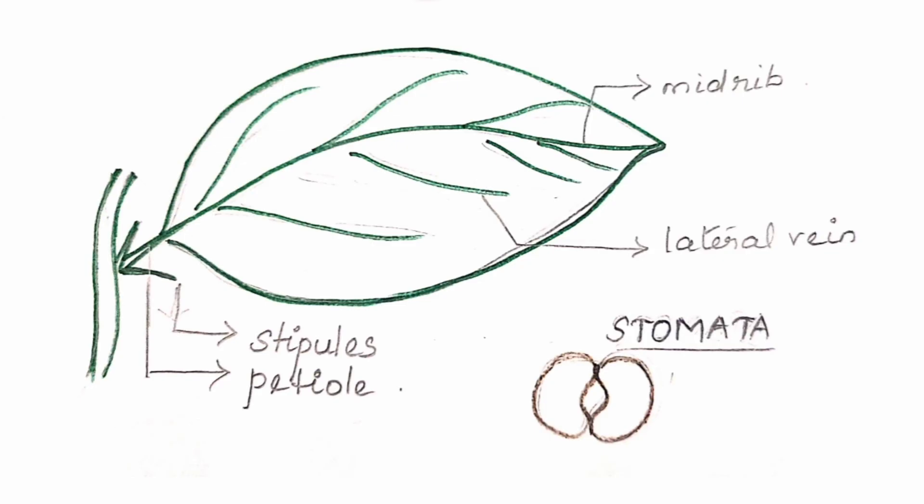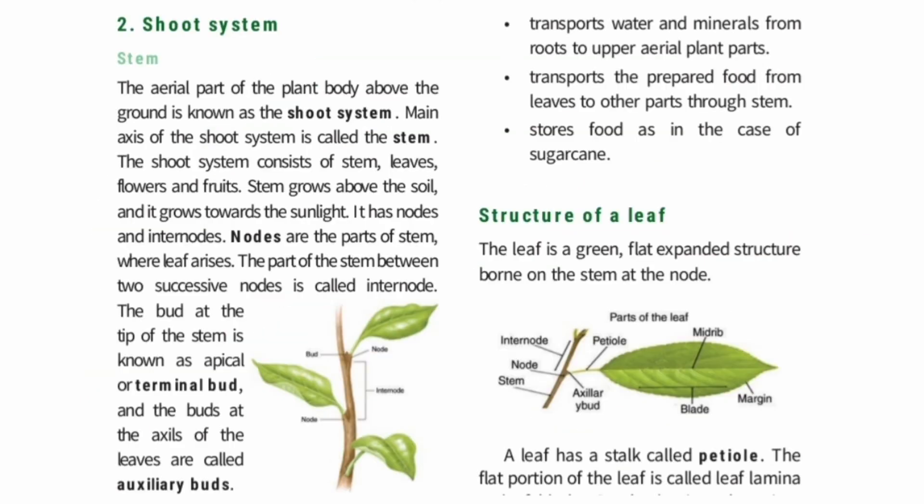On the lower side of the leaf, we can see many tiny pores or openings called stomata. Leaves are called the food factories of the plant because food is prepared there.